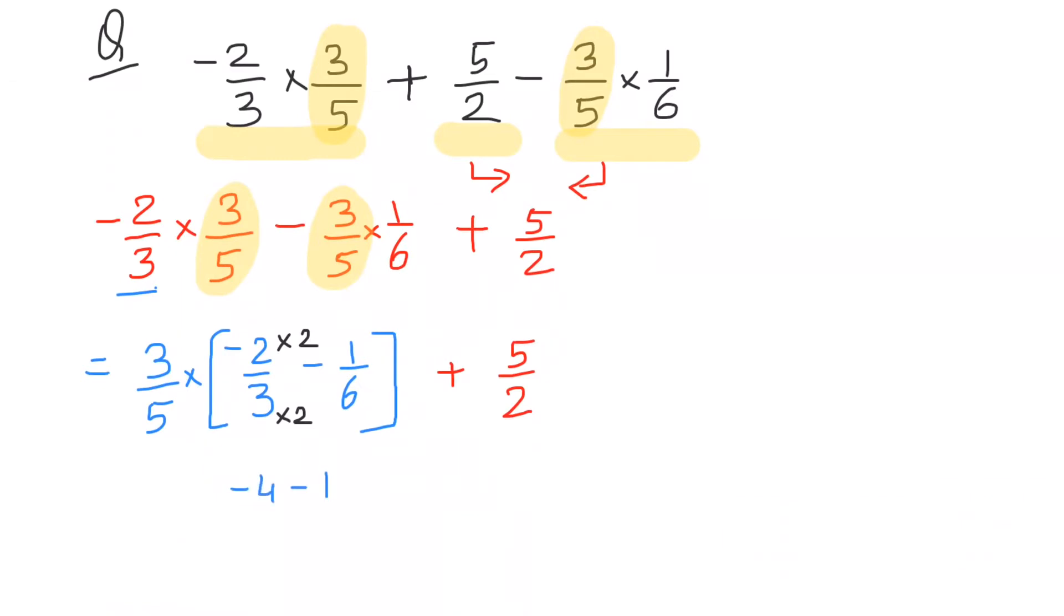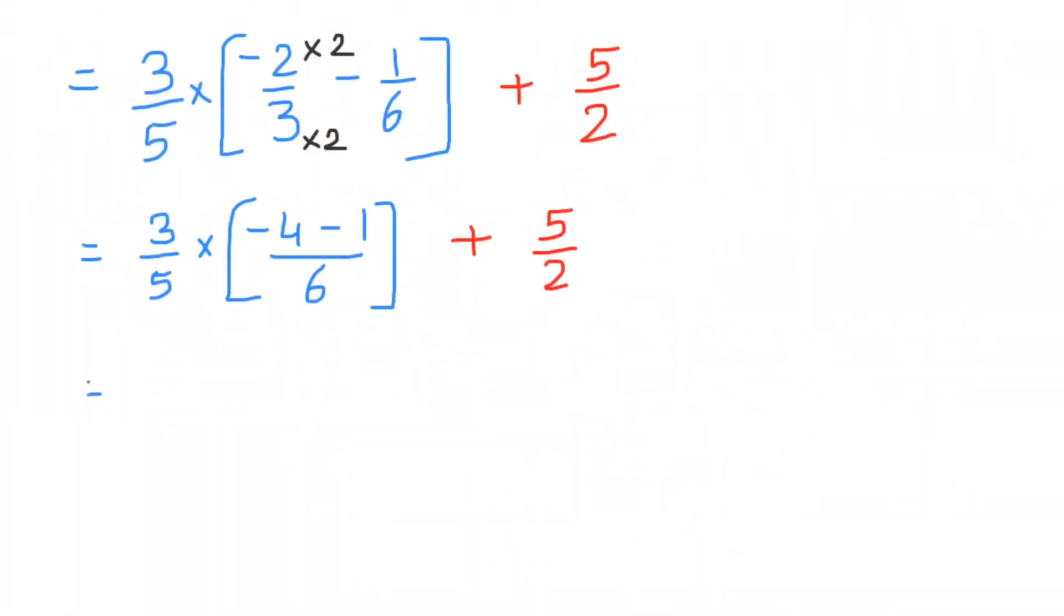And remaining numbers as it is. So that is three upon five multiplied by negative five upon six, and then plus five by two as it is. That we will solve in the last step. Now you can do cancellation when you have multiplication in terms.